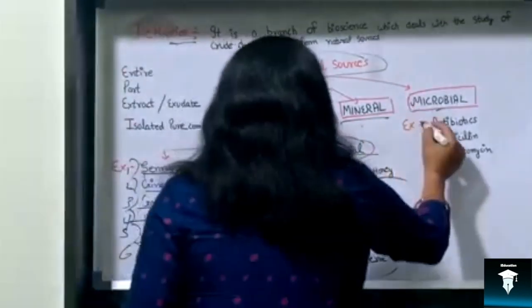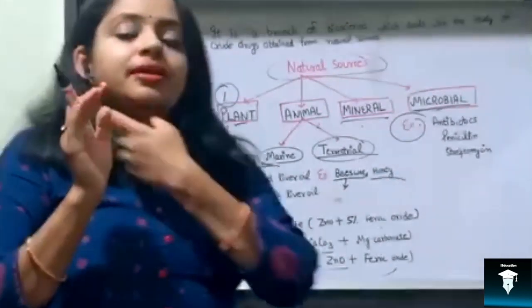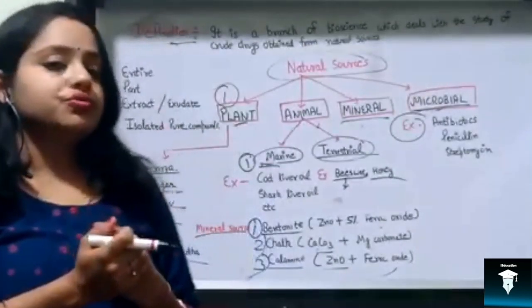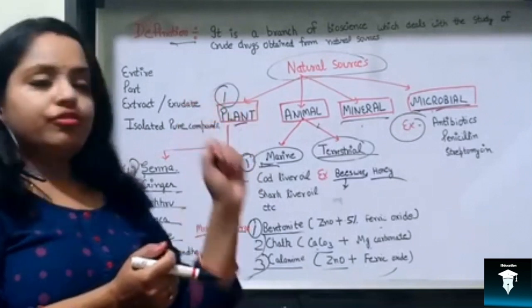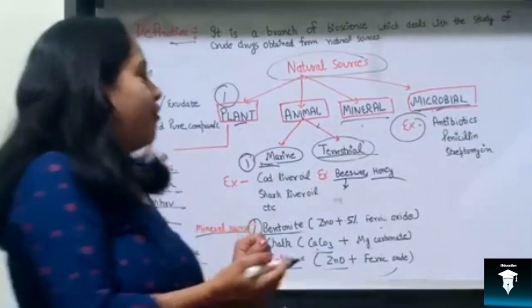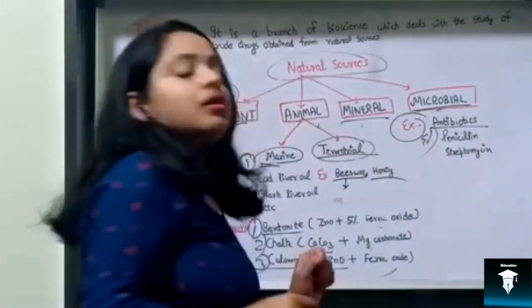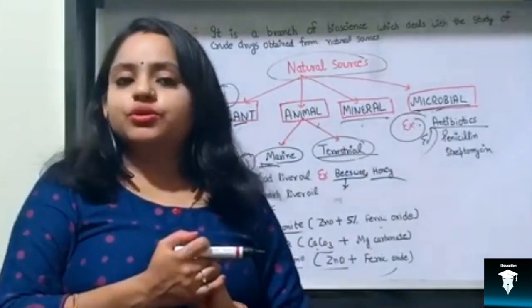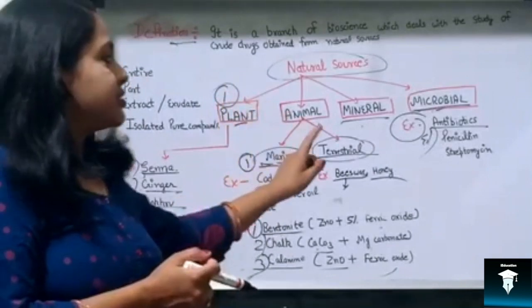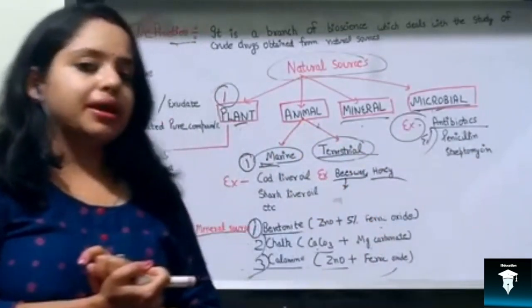Next are examples of drugs obtained from microbial sources. Microbial source is a very important source and several antibiotics are obtained from microbial sources only. For example, the antibiotic Penicillin, which is obtained from the fungus Penicillium.